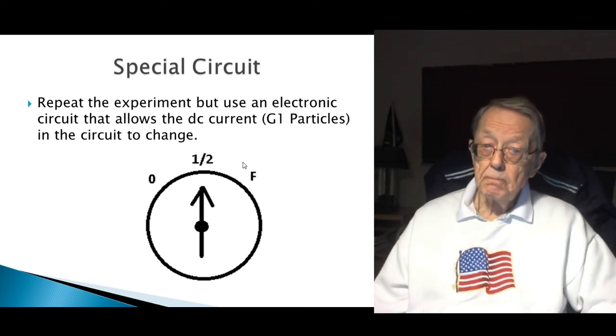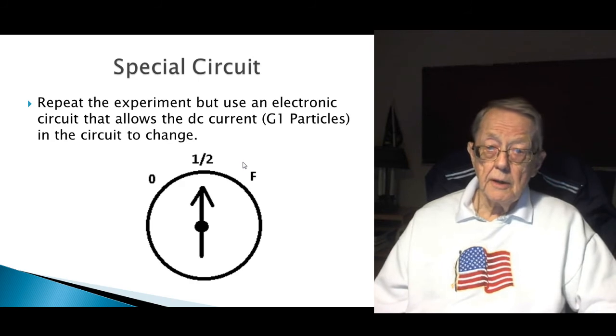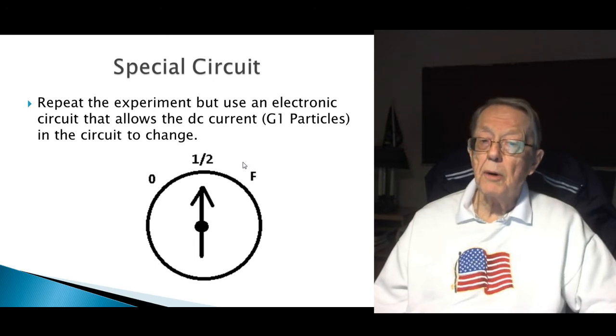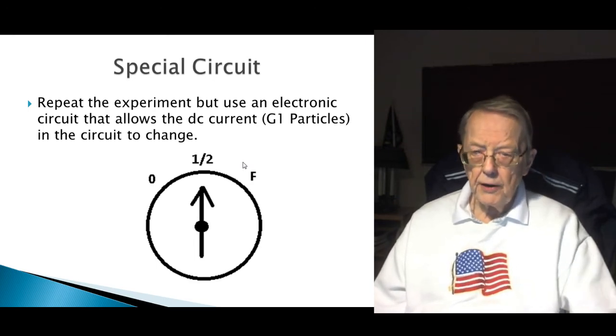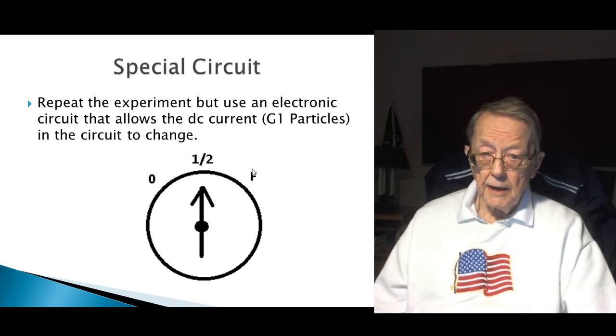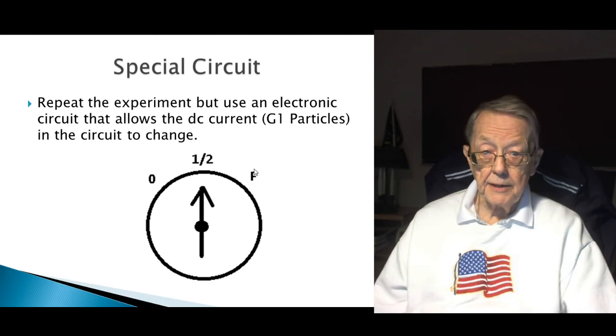So now what we're going to suggest is a special experiment. I'm going to change this detector to use an electronic circuit that allows the DC current, that is the flow of G1 particles, through this circuit to vary from zero to full, whatever that is. I'm going to make this thing and use it in place of the detector. So then I can adjust it.